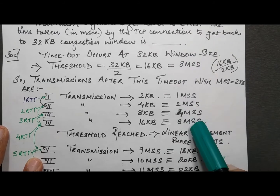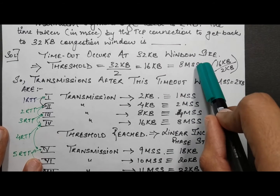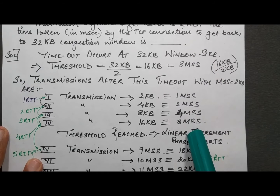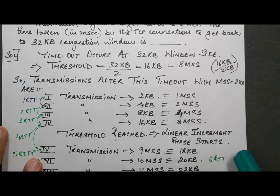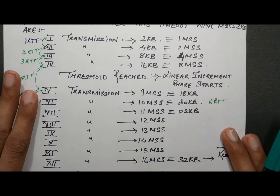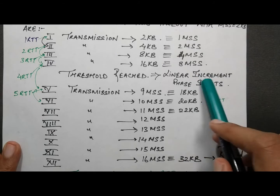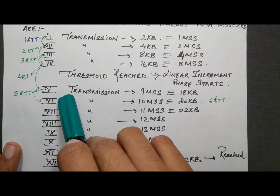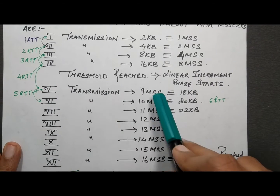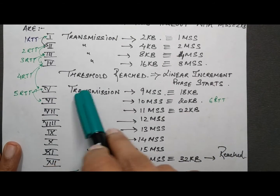At 8 MSS we reach the threshold. We multiply by 2 during slow start until the threshold is reached. After reaching the threshold, we switch to the linear increment phase — congestion avoidance.